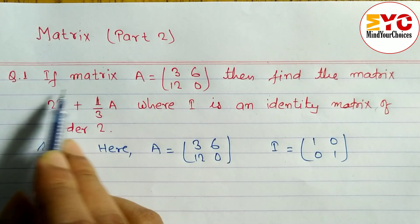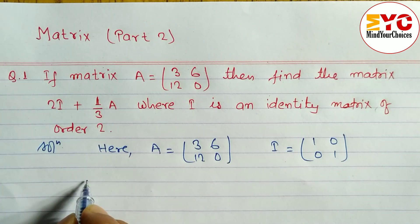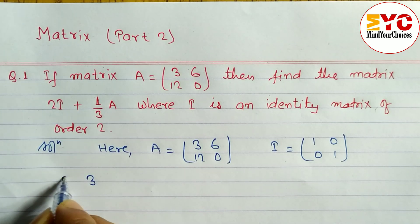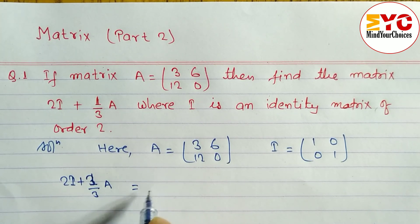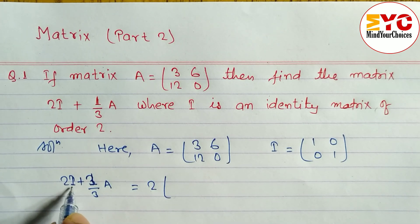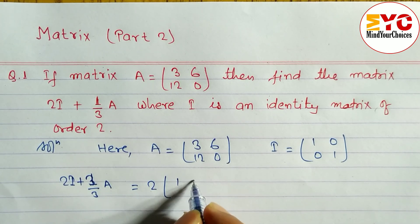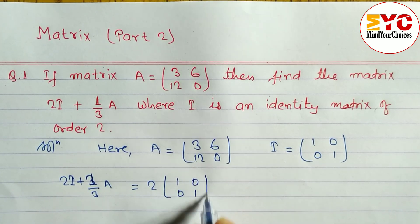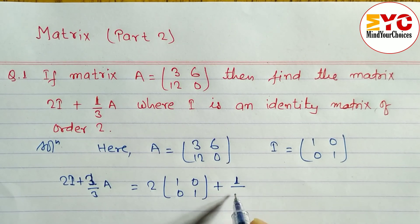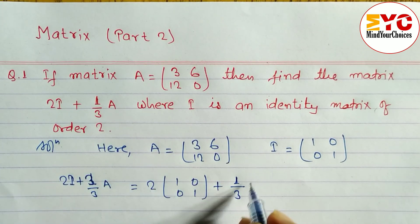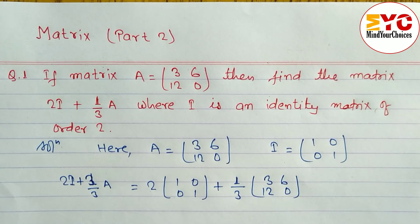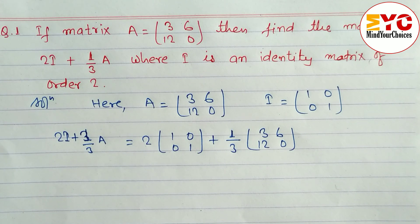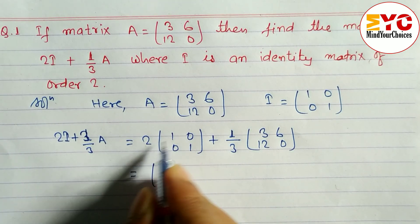We write 2I + (1/3)A. Matrix I is the identity matrix [[1, 0], [0, 1]], and matrix A is [[3, 6], [12, 0]]. So the expression becomes 2×[[1,0],[0,1]] + (1/3)×[[3, 6], [12, 0]].